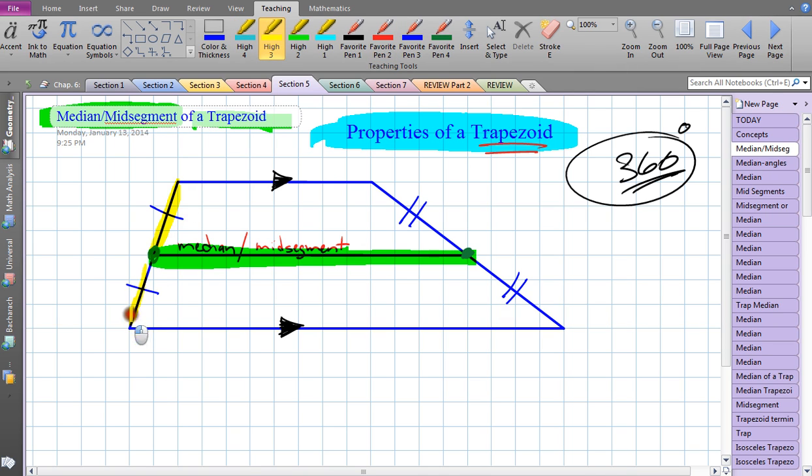That's why I put these tick marks in, showing that these two segments are now congruent, and these two segments are congruent. Therefore, we have the mid-segment or median, whatever you want to call it. And it turns out there's a mathematical relationship.